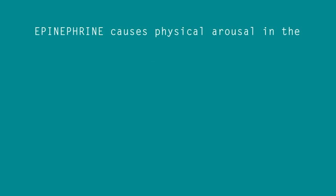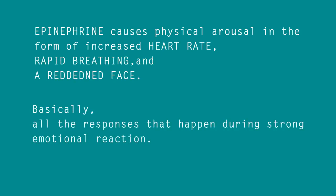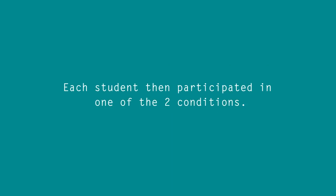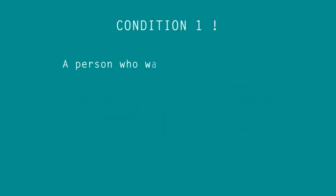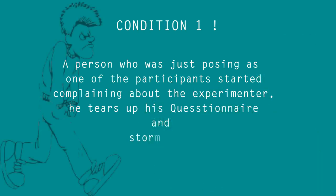Those volunteers were all injected with a drug called epinephrine. This drug causes physical arousal in the form of increased heart rate, rapid breathing, and reddened face — basically all the responses that happen during a strong emotional reaction. Each student then participated in one of two conditions. In one condition, a person posing as one of the participants started complaining about the experiment, tore up his questionnaire, and stomped out.